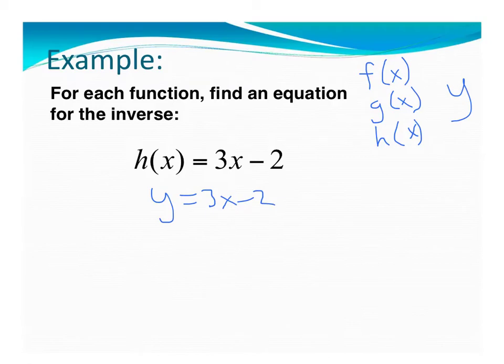And what we're going to do is we're going to switch the x and y. So what I'm going to have now is x equals 3y minus 2. And now I'm just going to resolve the equation for y.